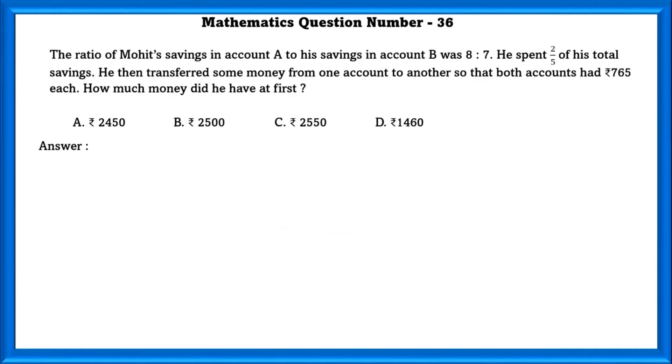Mathematics question number 36. The ratio of Mohit's savings in account A to his savings in account B was 8 is to 7. He spent 2 by 5 of his total savings. He then transferred some money from one account to another so that both accounts hold 765 rupees each. How much money did he have at first?